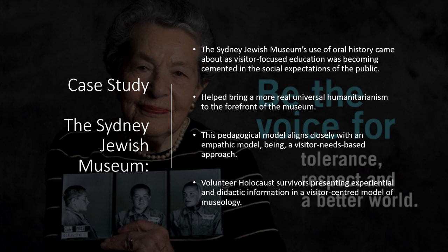Furthermore, these practices exemplify the theoretical ideals of new museology, where the museum is a cultural space alive with people, with the volunteer survivors presenting both experiential and didactic information in a visitor-centered model. The survivors focus on correlating their stories to larger scale human rights themes in order to educate their audience about the Holocaust and the consequences of hatred and racism, aligning closely with the UDHR — the Universal Declaration of Human Rights — which is the Holocaust Museum's basis.